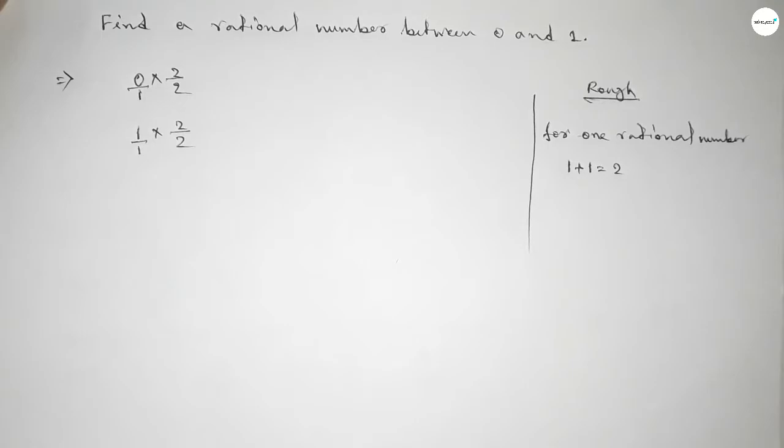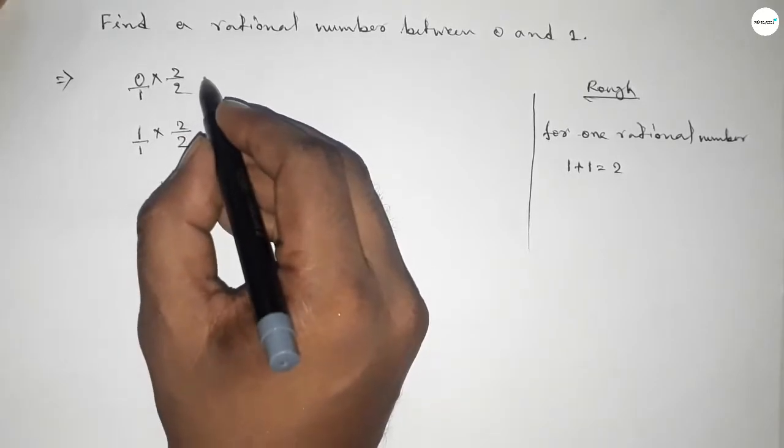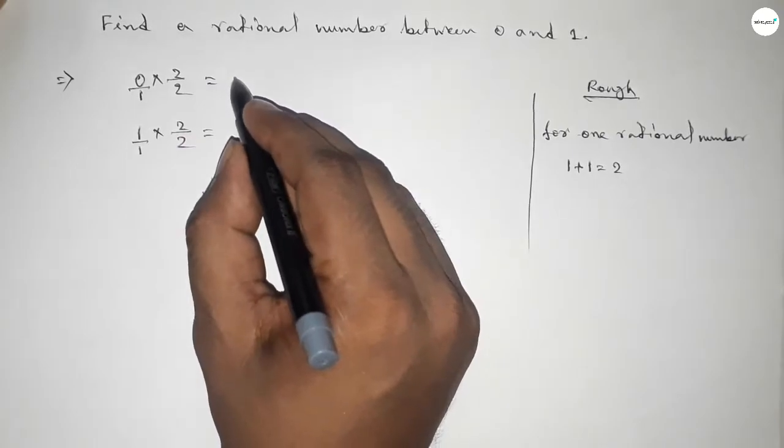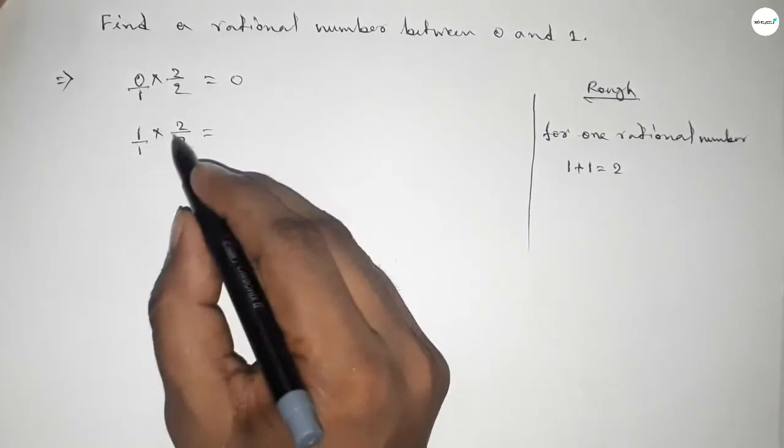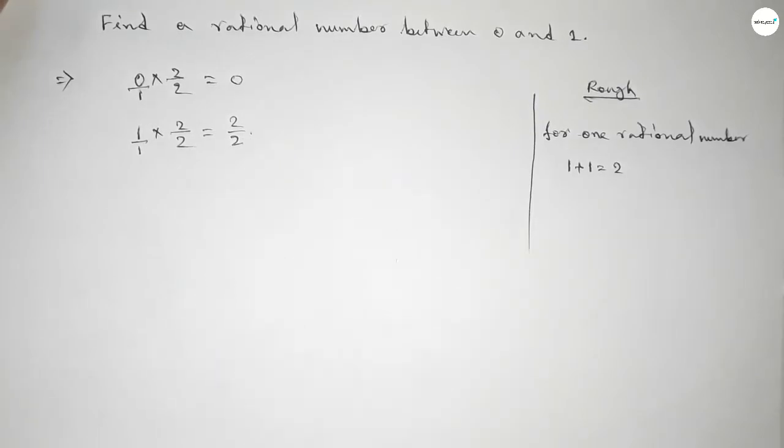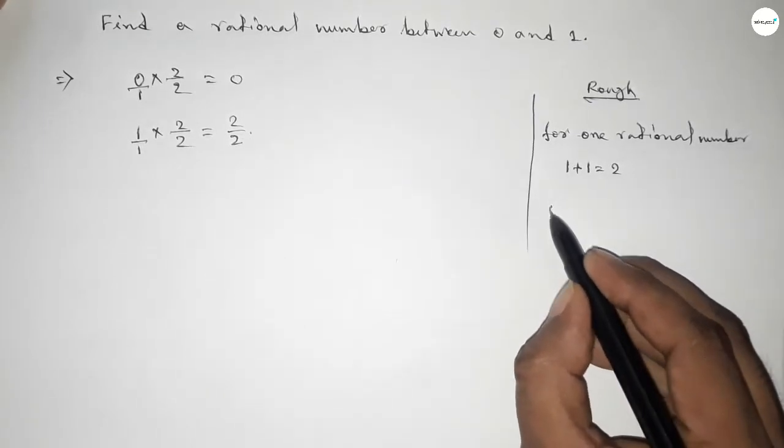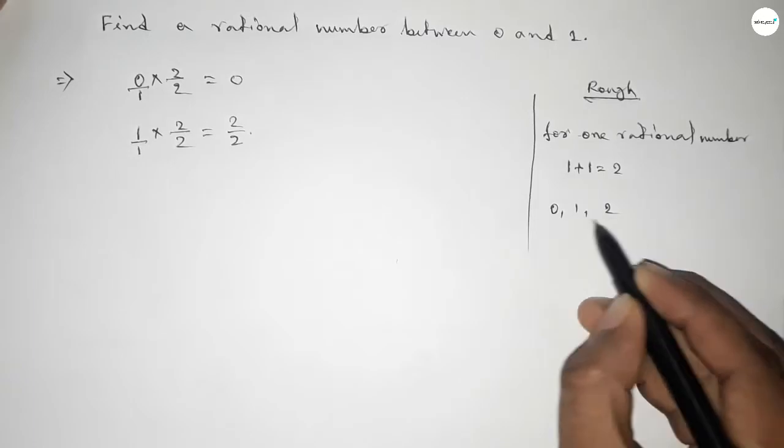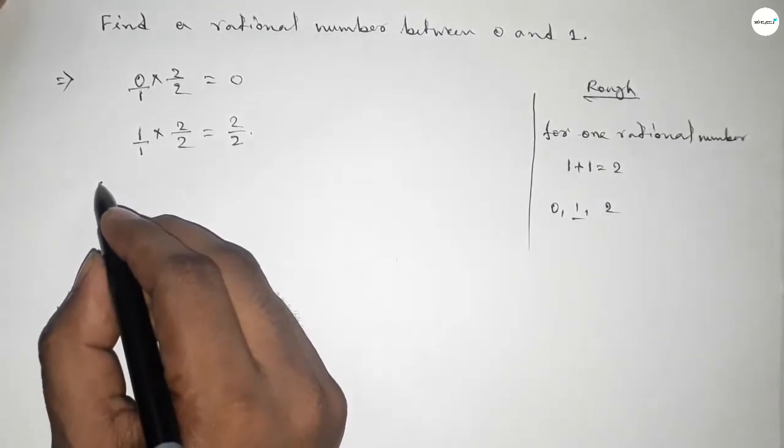Okay, now product with 0 is 0 and this is 2 over 2. Now between 0 to 2, we can find one natural number, and by this natural number we can form one rational number.